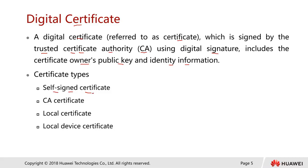By doing that you don't actually need to pay anything to a trusted certificate authority. Then we also have the CA certificate — this is to verify the CA itself; CAs also have their own certificate. Then we have the local certificate, which is the certificate that after being signed we download ourselves. And we also have something called the local device certificate, which is usually for the machine to use.